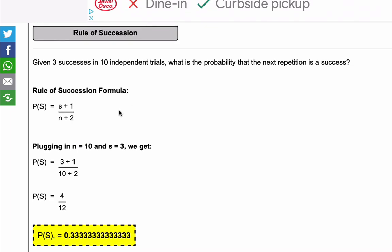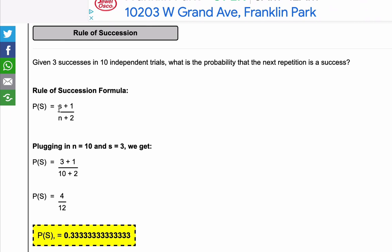Now the Rule of Succession formula goes like this. The probability of a success in the next repetition is S plus one over N plus two.